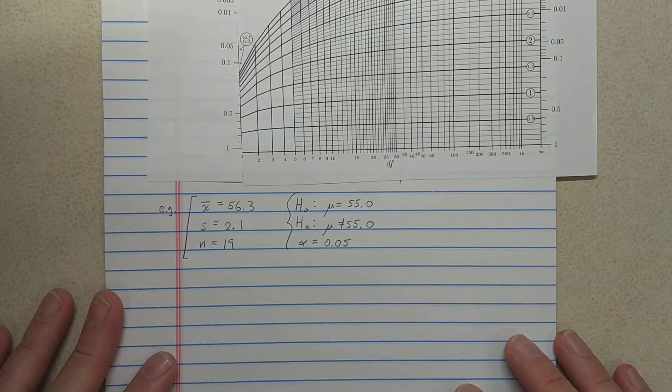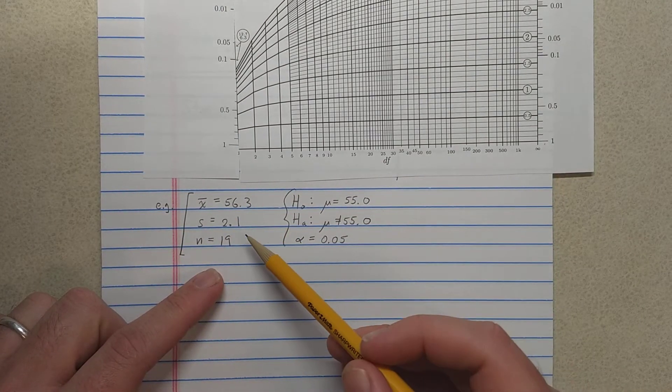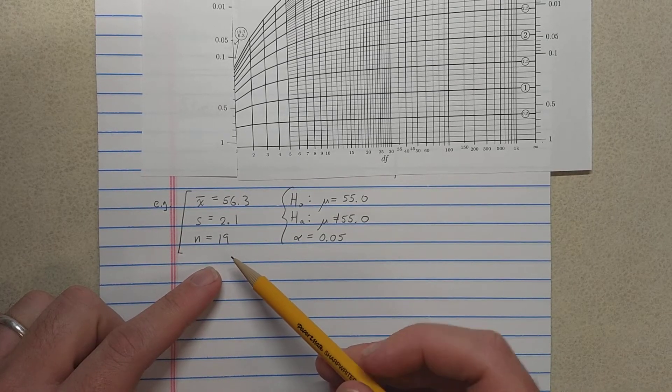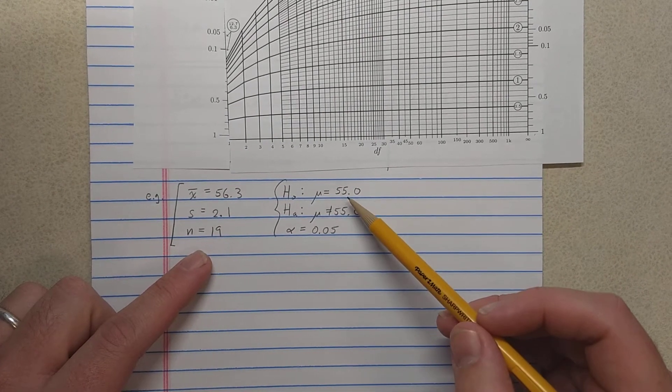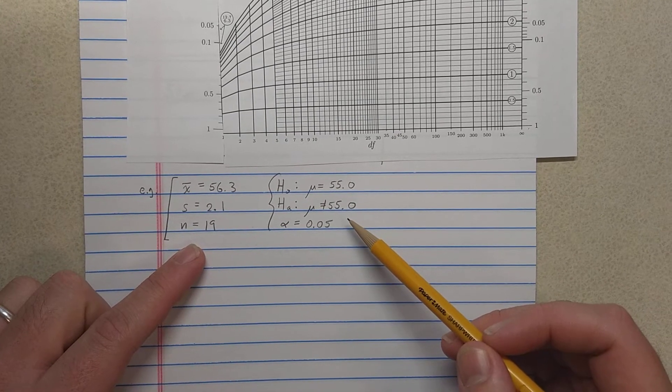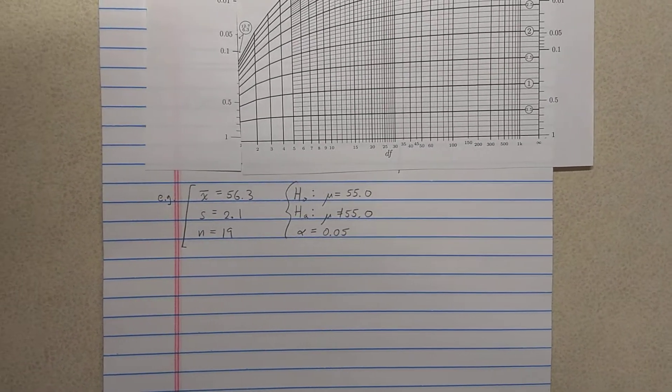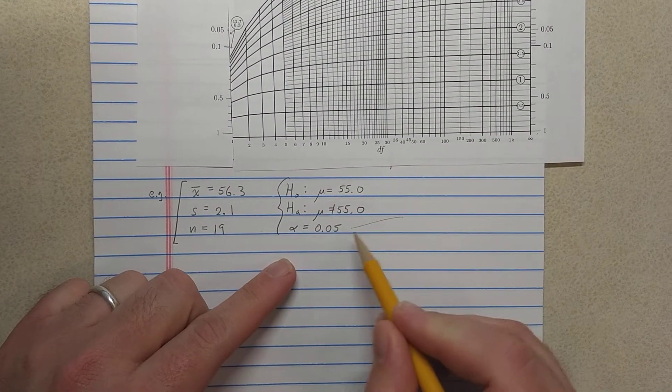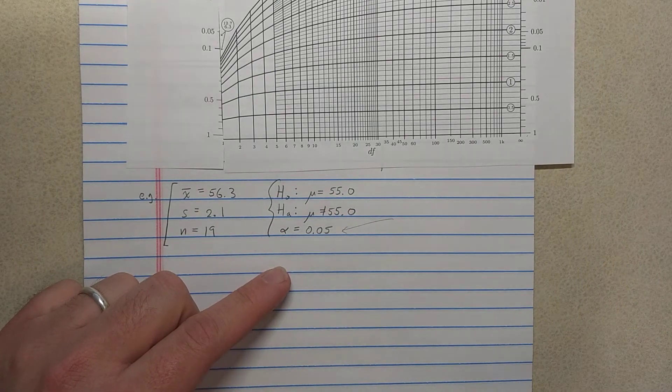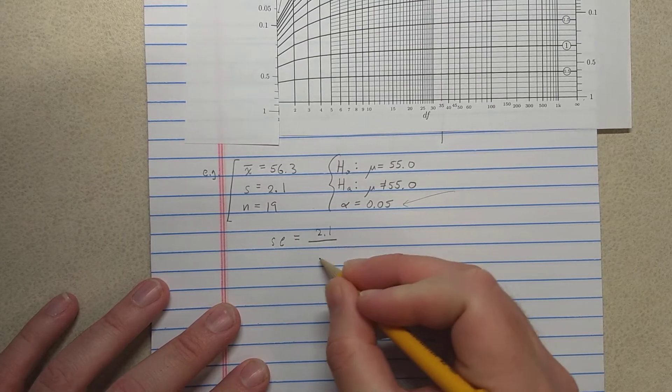Okay, so let's have a look at a problem and just see how it would work for fun. So let's say you do a one-sample data collection here, a random sample, and you find the mean of your sample is 56.3, standard deviation 2.1, and you had a sample size of 19. Could we do a significance test where a null hypothesis is that the population mean is 55.0, and an alternative is that it's simply not 55.0? And we'll use significance level 0.05. Of course, we're just using this to see how we can compute the p-value, so that doesn't really matter that much. First, I'd have to do a couple preliminary calculations, like compute the standard error.